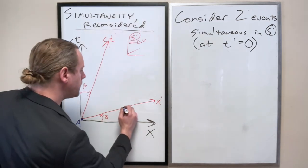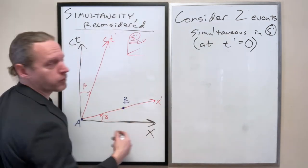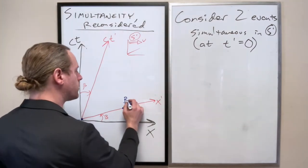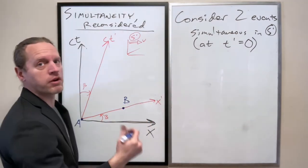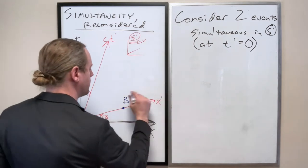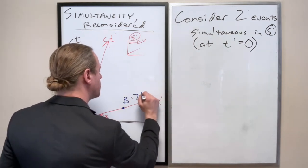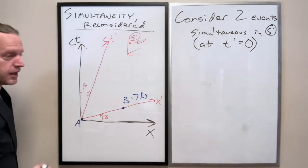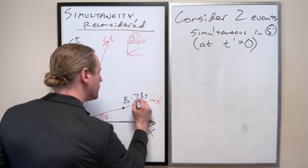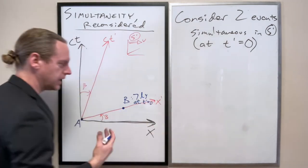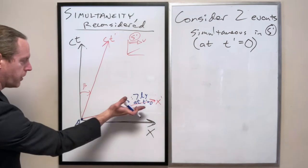And then here is event B happening at t prime of zero and seven light years away from event A. And again, at t prime of zero. They're both on the t prime axis.